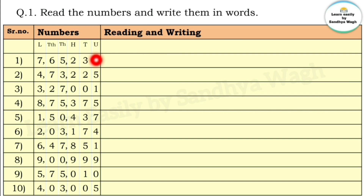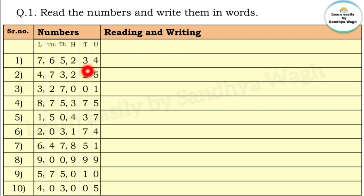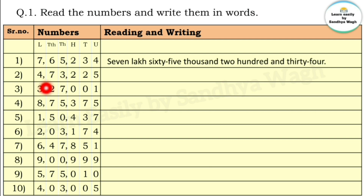So 4 is at the units place, 3 is at the tens place, 2 is at the hundreds place, 5 is at the thousands place, 6 is at the ten-thousands place, and 7 is at the lakhs place. For the next number: 5 is at the units place, 2 is at the tens place, and 5 is at the hundreds place, and 8 is at the next place.